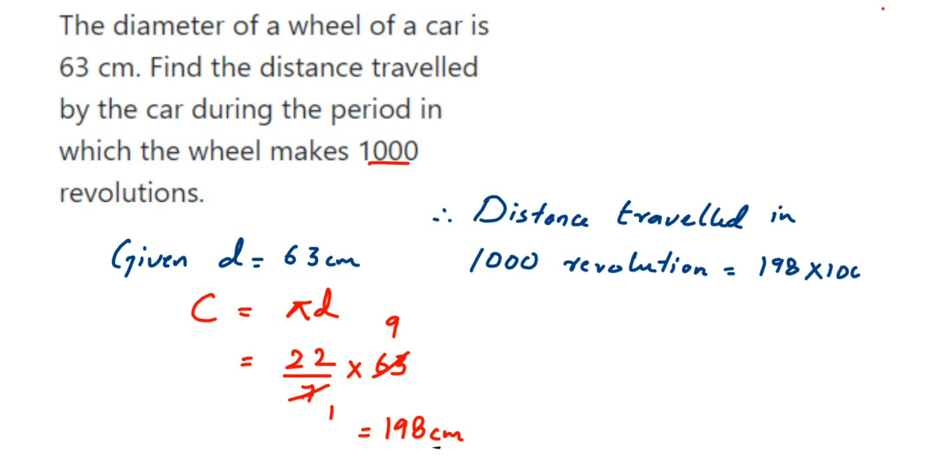So this is equal to 198,000 cm. Now, if you want to convert this into meter, you can divide with 100. We know that 1 meter is equal to 100 cm. When you want to convert cm to meter, you have to divide by 100. So when you divide this by 100, you will get 1980 meter. So this much distance will be covered in 1000 revolution.